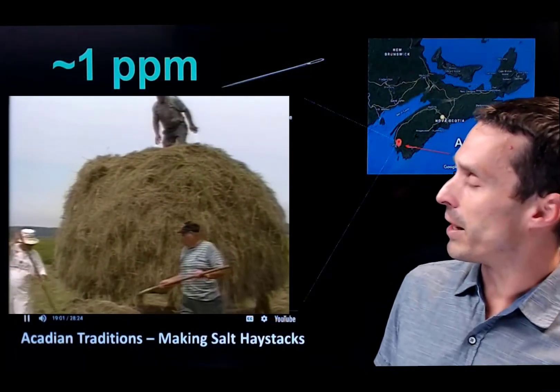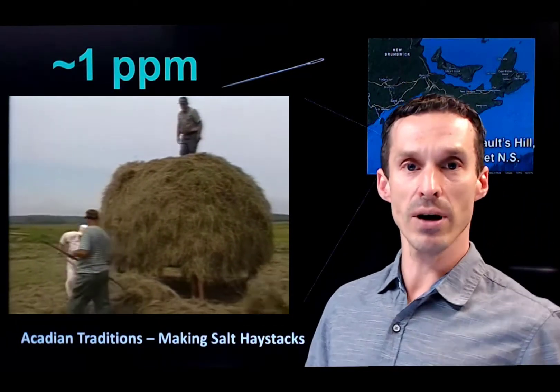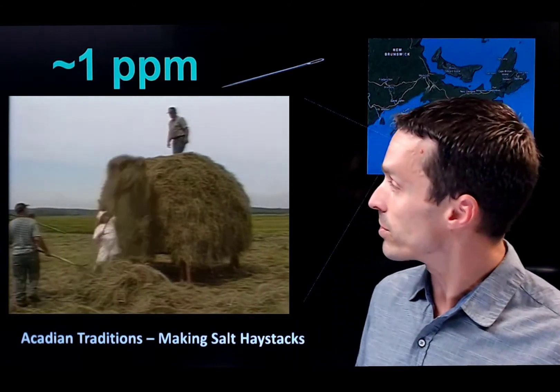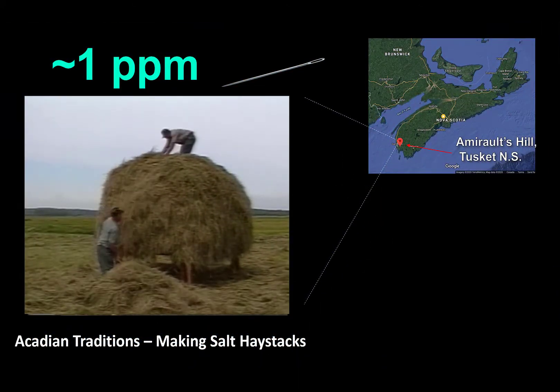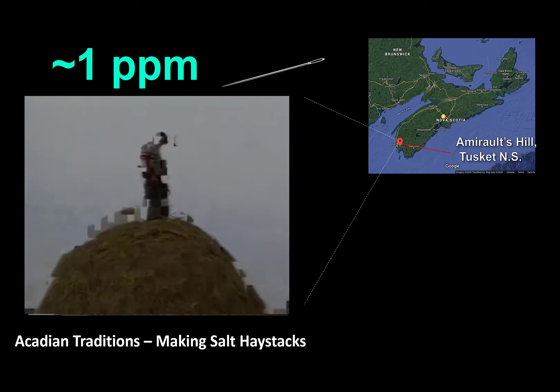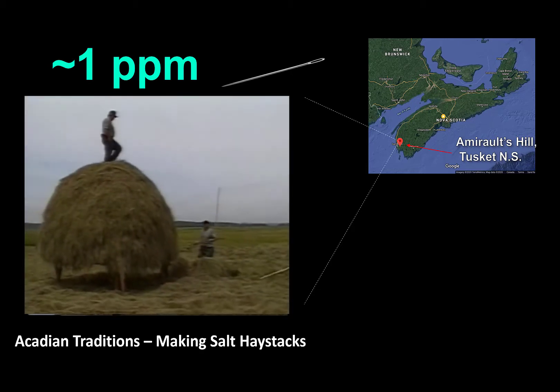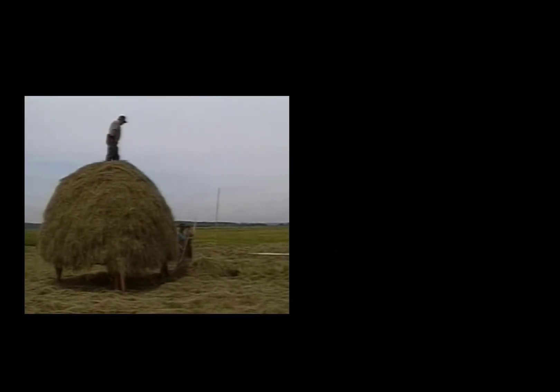Here's another way to look at it. This is home for me, right? I'm from the southern tip of Nova Scotia. And this is a haystack. It's part of the tradition of the Acadian culture. So how many pieces of hay are in a haystack? About a million, okay? So if you put a needle in a haystack, you're roughly talking about one part per million.